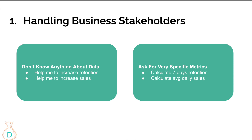The second type of stakeholder asks very specific questions — like, can you calculate the first seven-day retention for new users? When an analyst receives a question like this, the first thing they should ask is: why? What's the point of calculating this metric, and what business question are they trying to solve? I've been in many situations where I was asked many specific questions — pull this data, write some SQL — and they'd end up asking for more and more data pulls because they're trying to answer some big question in the back of their head. They think the metric they're asking for will help, but it doesn't.